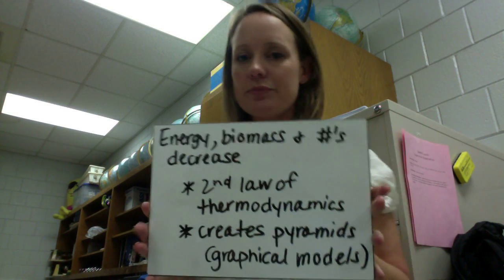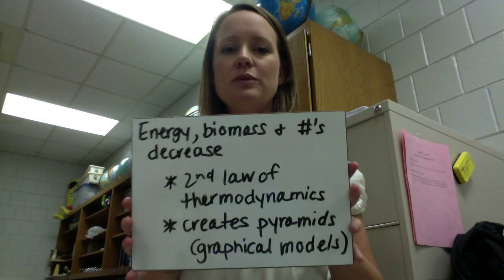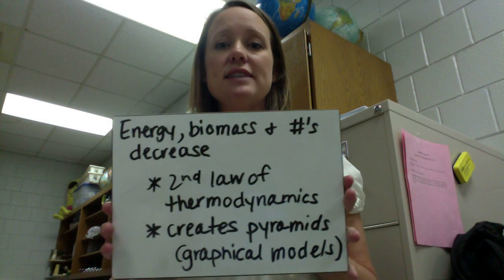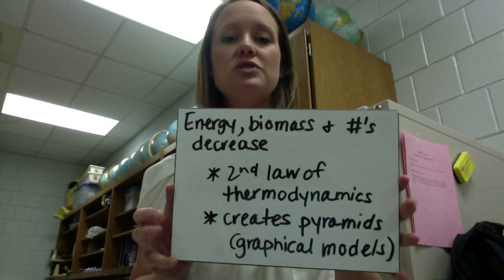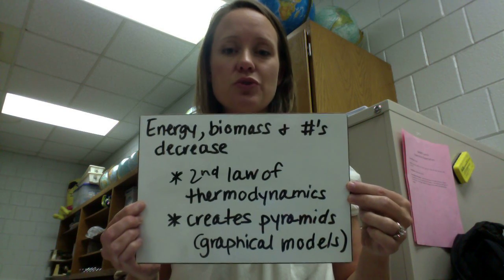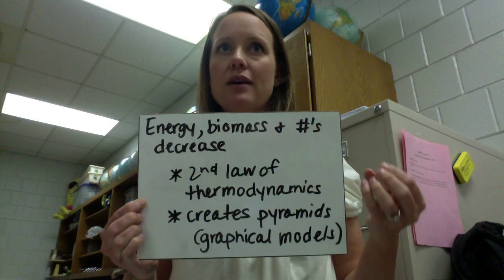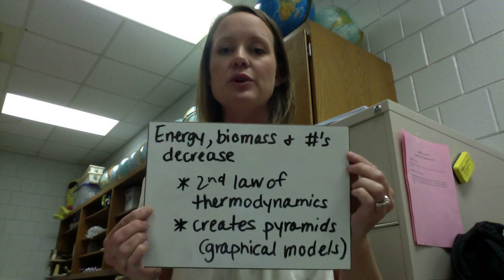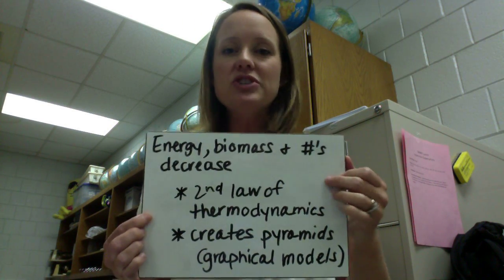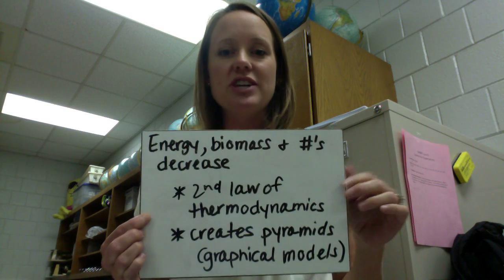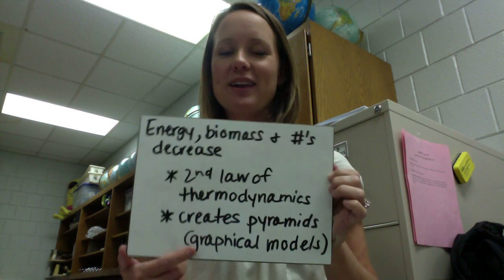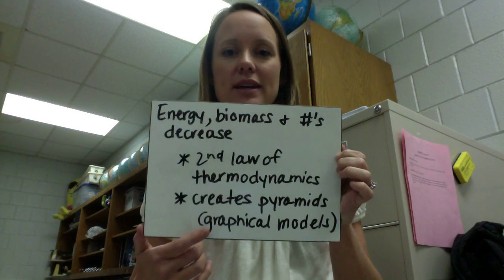When we move from one trophic level to the next, the amount of energy that flows decreases, the biomass decreases, and the number of organisms decreases. This is mainly due to the second law of thermodynamics — energy cannot be created or destroyed, but it is usually converted to lower quality or heat. At each trophic level, animals and plants undergo respiration and lose some of that energy as heat. So if we create a graphical model of our food chains and food webs, we get a pyramid shape.